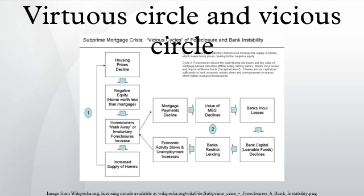Vicious circles in the subprime mortgage crisis: the contemporary subprime mortgage crisis is a complex of vicious circles, both in its genesis and in its manifold outcomes, most notably the late 2000s recession. A specific example is the circle related to housing. As housing prices decline, more homeowners go underwater, when the market value of a home drops below the mortgage on it.